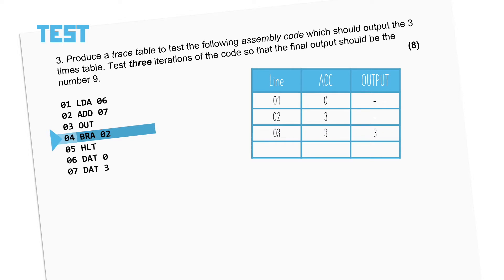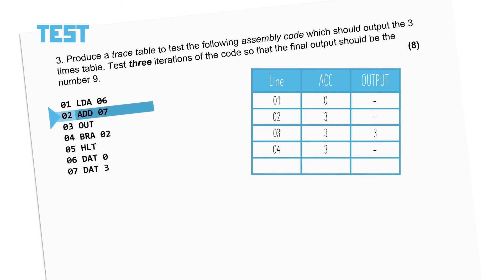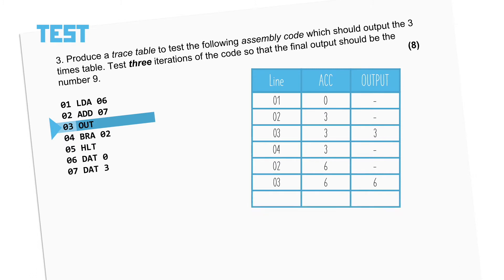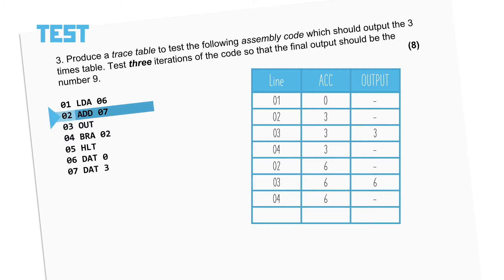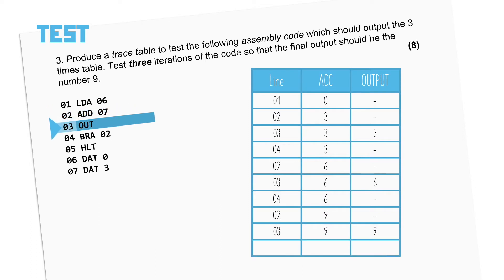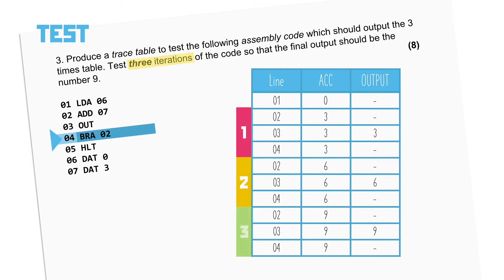The branch instruction only impacts the program counter, so as we haven't got that down as a heading nothing really changes on this line, but the next line we write about will be line two as it's branching to line two. We then need to add the content of line seven to the accumulator — that's three plus three, it's six, and that's what goes into the accumulator. Line three is output, then line four branches back to line two again. This is our third time through the loop, the third iteration, so this will be the last one we need to document. Adding three to the accumulator again gives us nine, and that's the output, and then the branch instruction pushes us back. We've got all three iterations done, so we're finished.